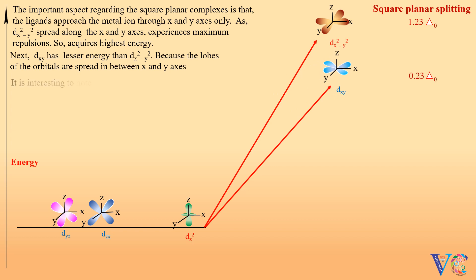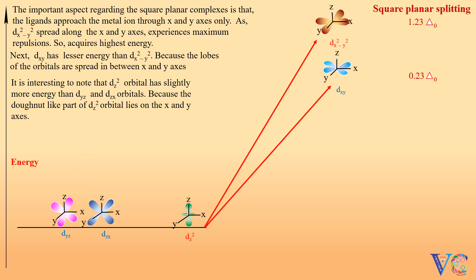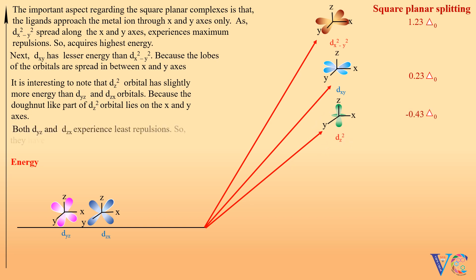It is interesting to note that the dz² orbital has slightly more energy than dyz and dzx orbitals, because the donut-like part of the dz² orbital lies on the x and y axes. Both dyz and dzx experience the least repulsions, so they have the least energy.